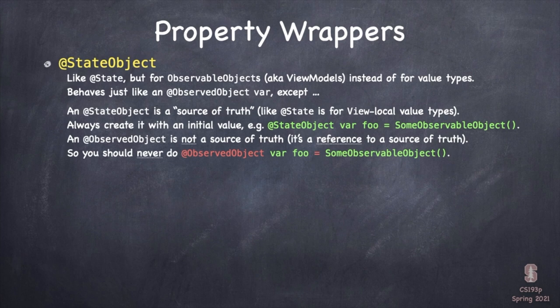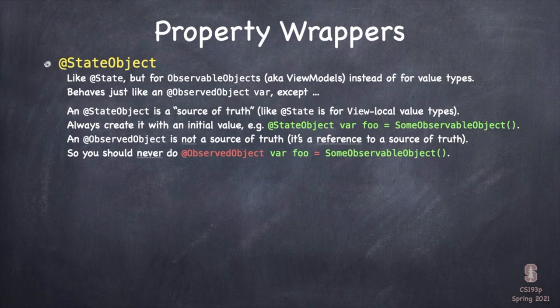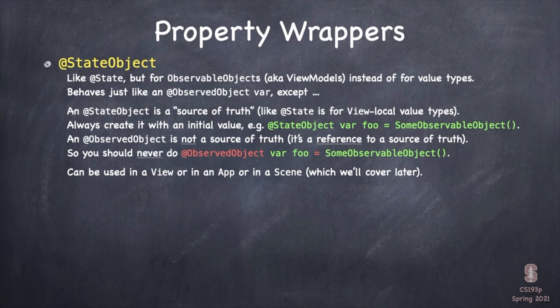@ObservedObject is not a source of truth — it's a reference to a source of truth. So you should never be doing @ObservedObject var foo = something; that would just be wrong. If you're saying equals something, you're creating a source of truth, and that belongs in a StateObject. Also, observed objects could live in @State objects — you could have an @State which is an array of ViewModels. @StateObject can be used in Views, Apps, and Scenes like MemorizeApp and EmojiArtApp.